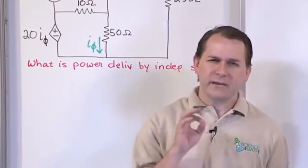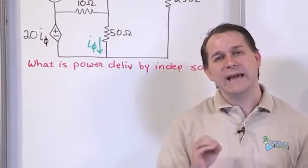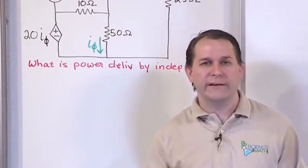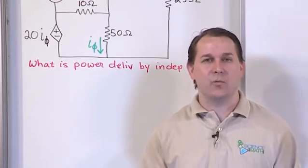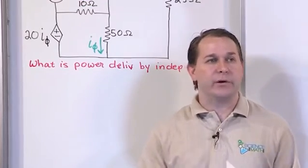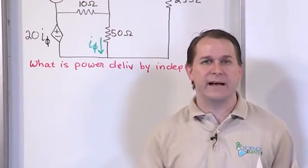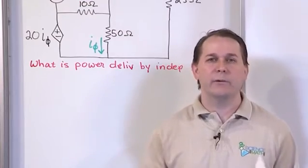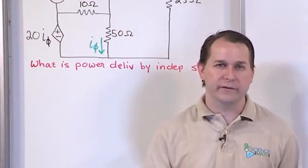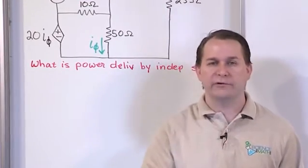If you remember, for the node voltage method, we solved the problems exactly the same way as we originally did. We set the equations up exactly the same way. But what we found is that when we have these dependent sources,